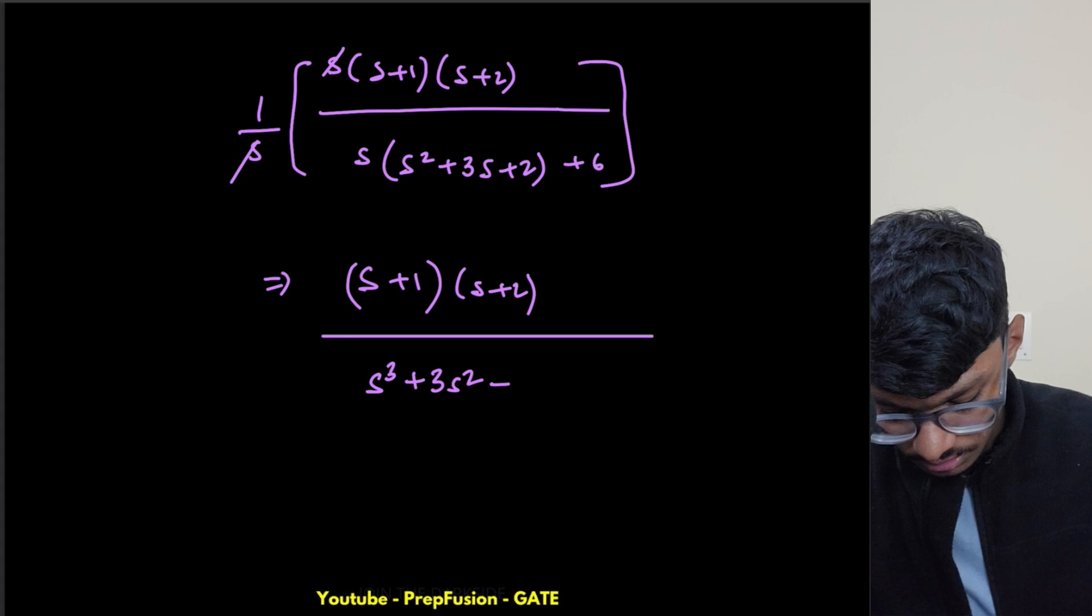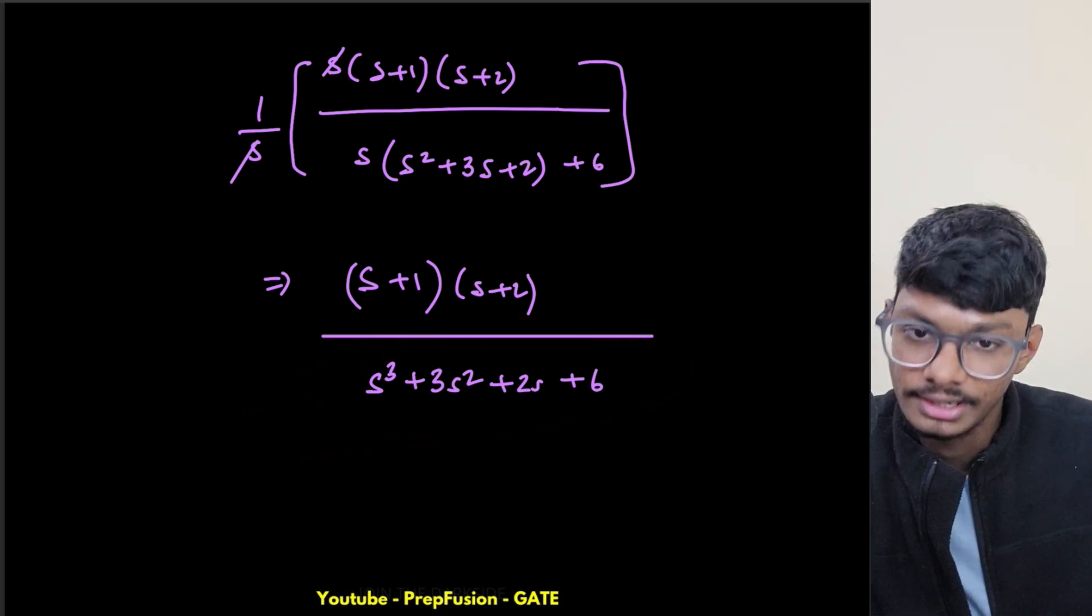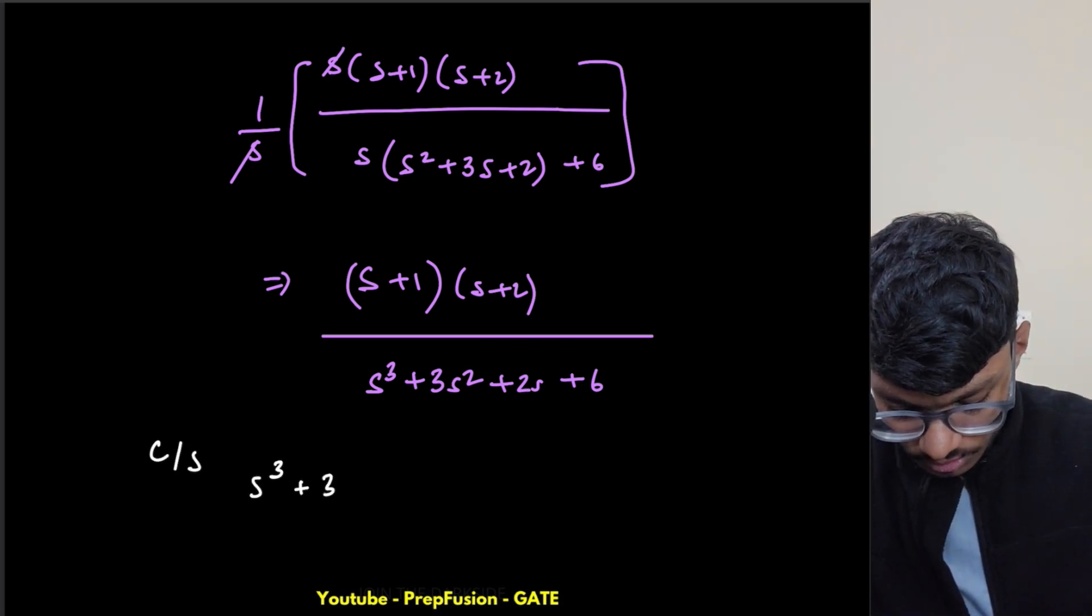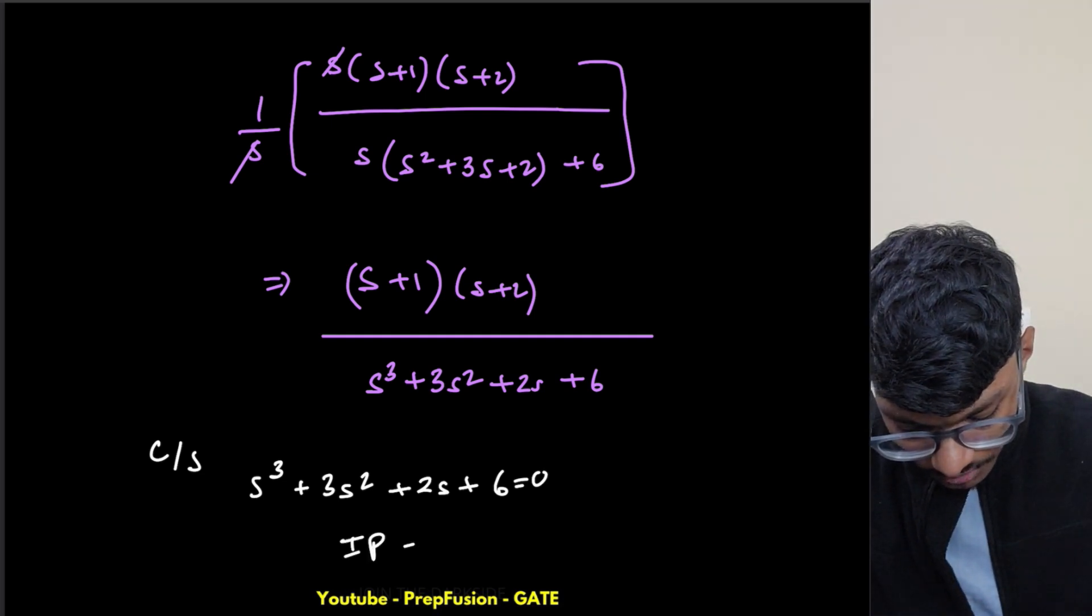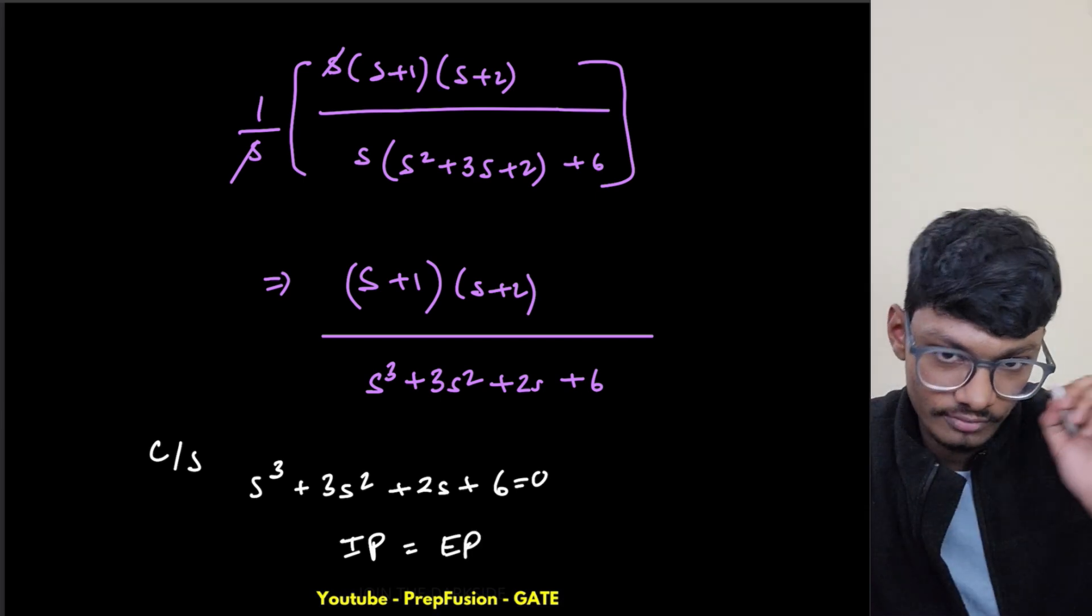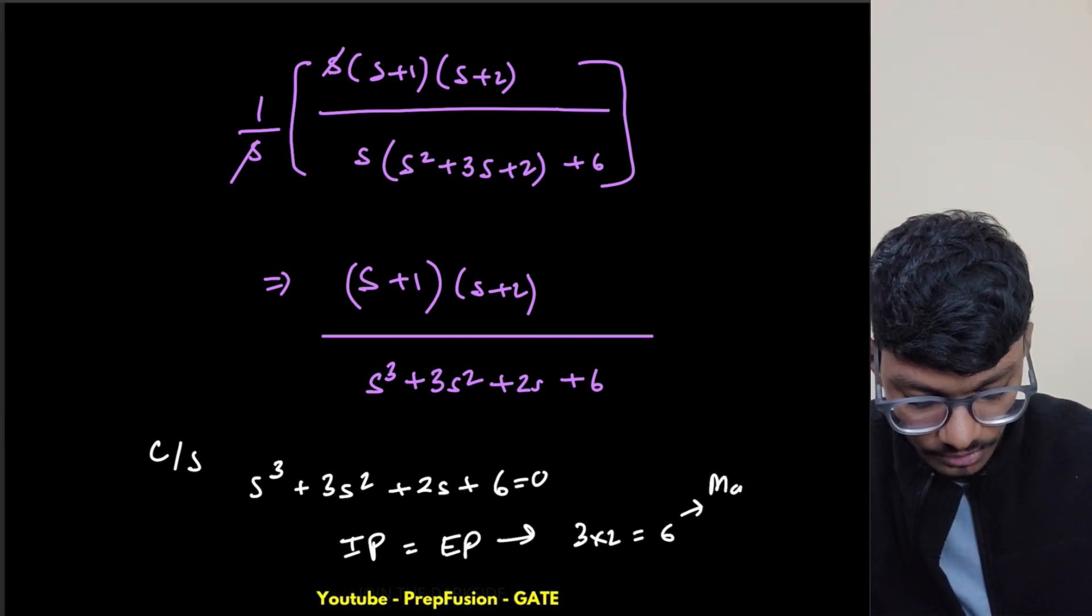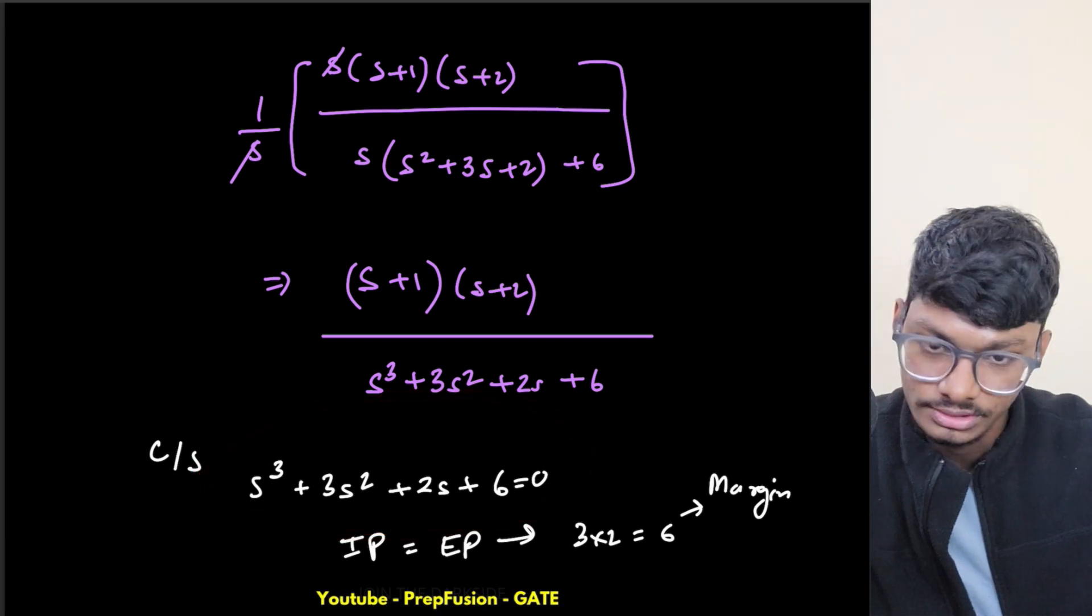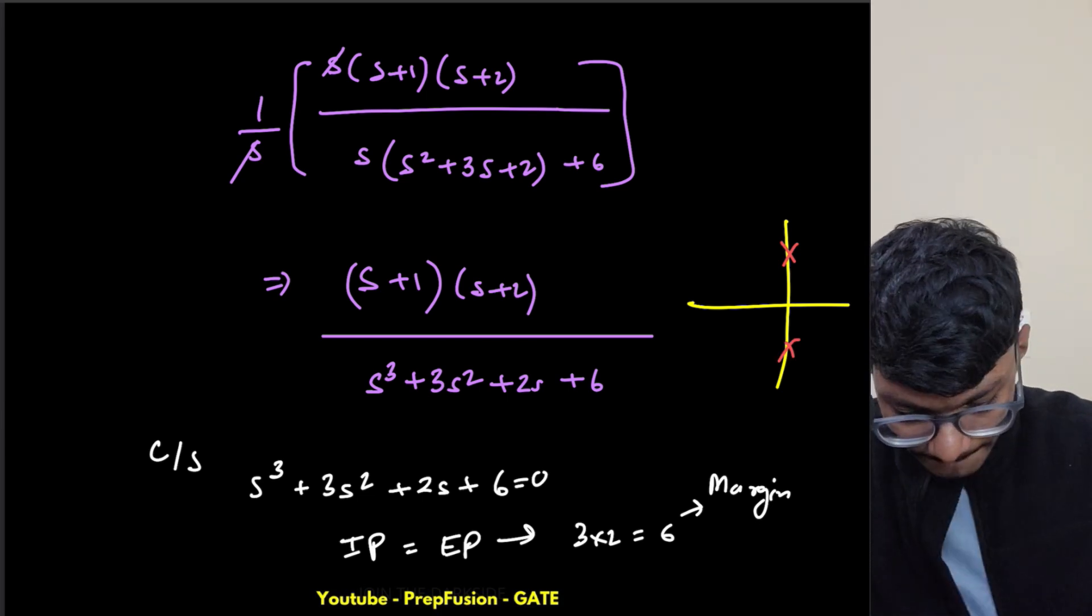Now what do you notice? This is the characteristic equation. If we equate this with 0, my characteristic equation is s³ + 3s² + 2s + 6 = 0. What will happen here? I observe that my internal product equals external product, or you can solve using the Routh-Hurwitz criterion. Hence 3 × 2 equals 6. My system is marginally stable. The poles lie on the imaginary axis. Because I have only three poles, two poles will directly lie on the imaginary axis and one will lie on the left hand side.